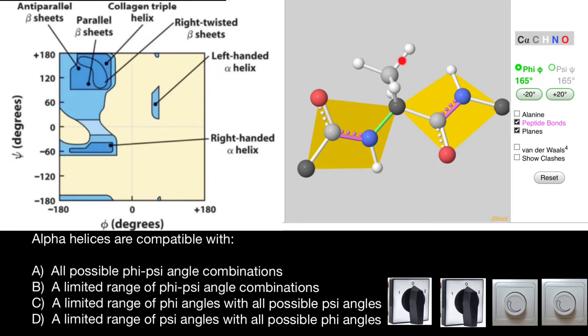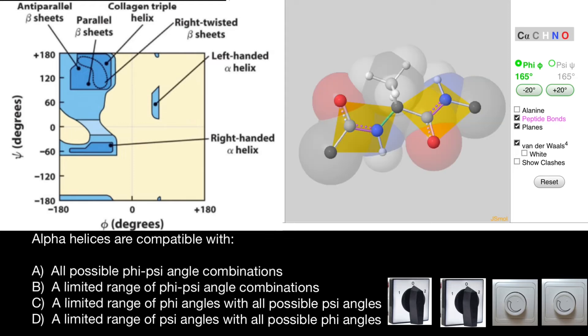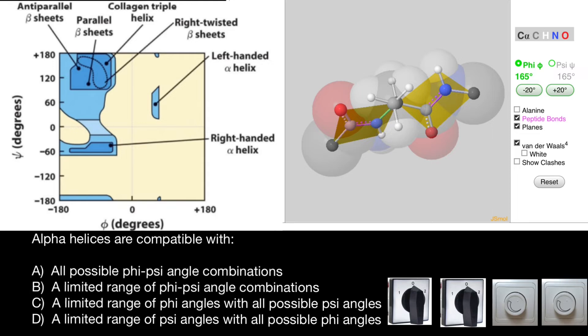When you look at this amino acid represented by ball and stick model, it looks like these planes can rotate freely, but this is not quite so. Take a look, for example, at another model which includes Van der Waals interactions. Now you see how this molecule looks like.